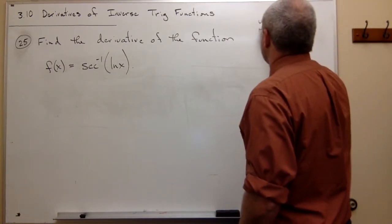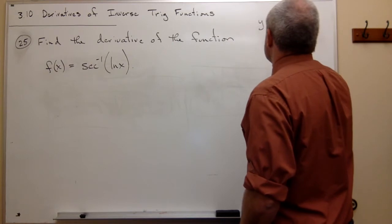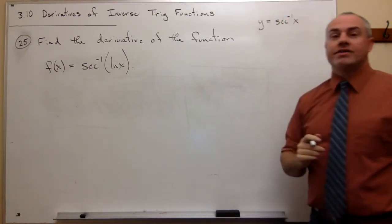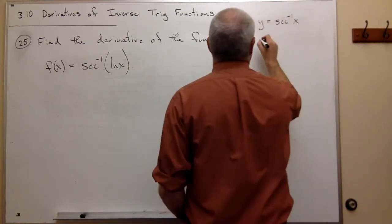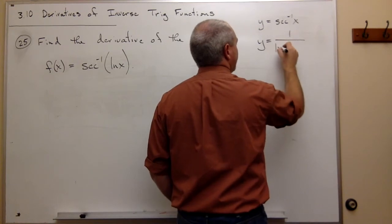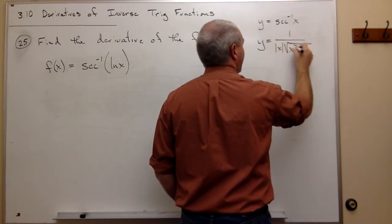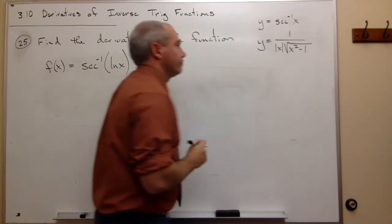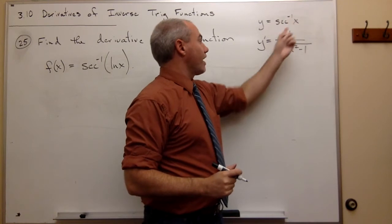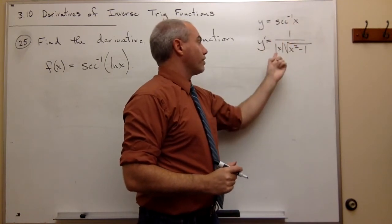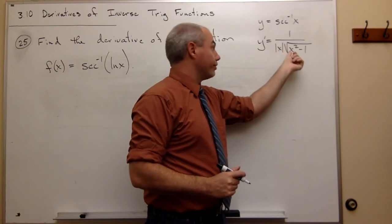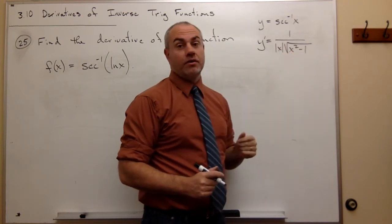Let's remind ourselves: if y = sec⁻¹(x), then the derivative of y is 1 over the absolute value of x times the square root of x² minus 1. So the derivative of sec⁻¹(x) is 1 over |x| times √(x² - 1).